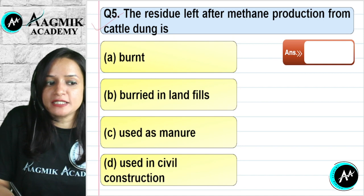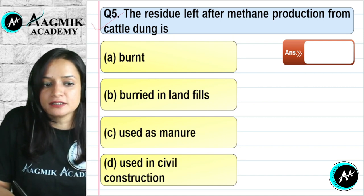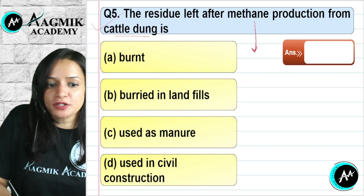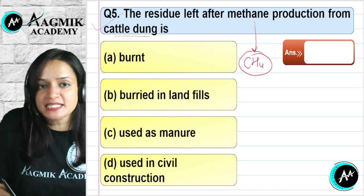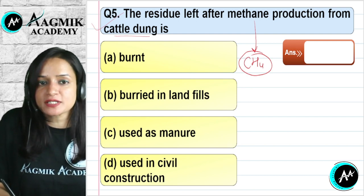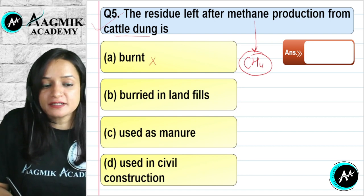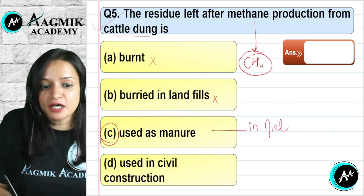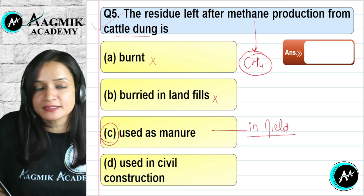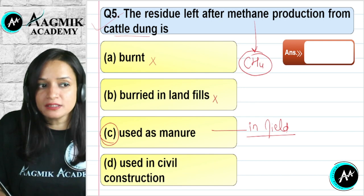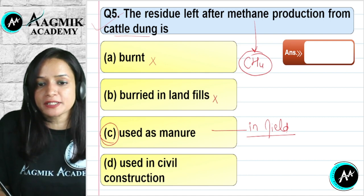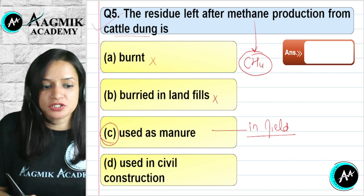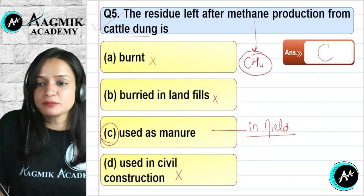Question number 5: The residue left after methane (CH4) or biogas production from cattle dung can be used as manure by farmers. It increases the fertility of the soil and the productivity of the crop. So there are two benefits: gas production and the remaining mass used as manure. Using it in civil construction is wrong. The correct option is C.